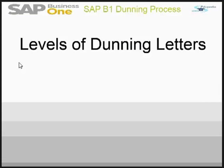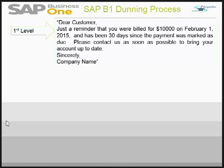These are the levels of dunning letters for a generalized business scenario. If a customer has failed to pay and it has been 30 days, depending upon the dunning terms and payment terms, a first-level letter can be released — simply a reminder that there is an overdue payment and it has been 30 days since the payment was due, asking the customer to contact as soon as possible.